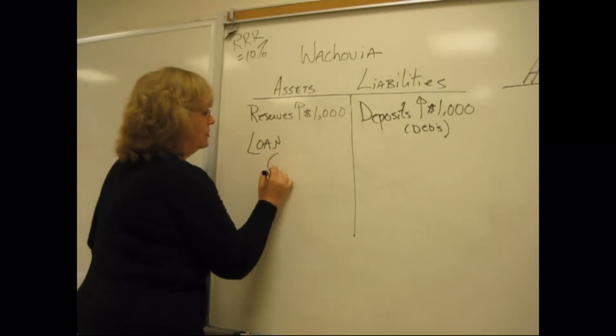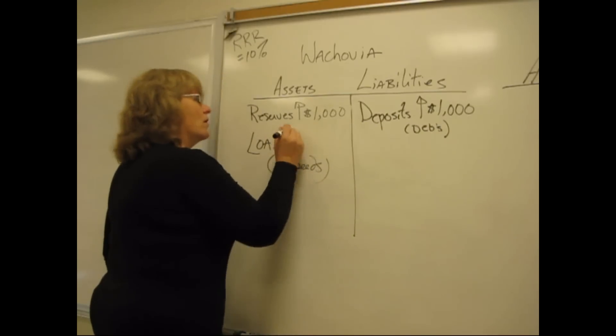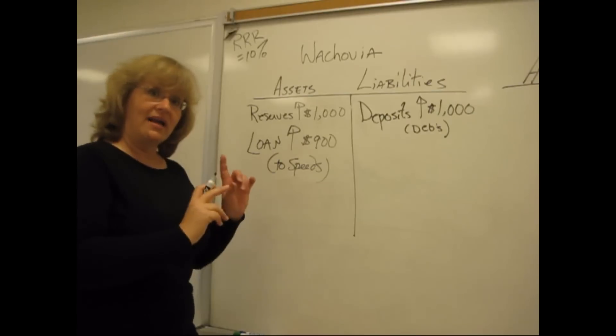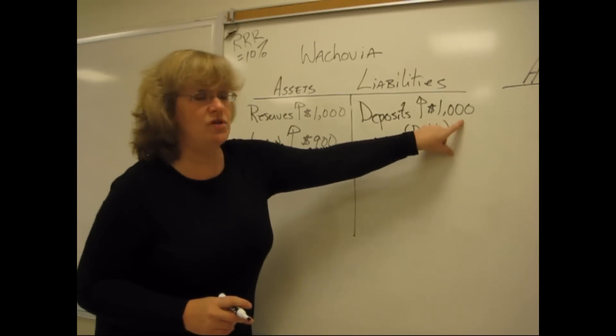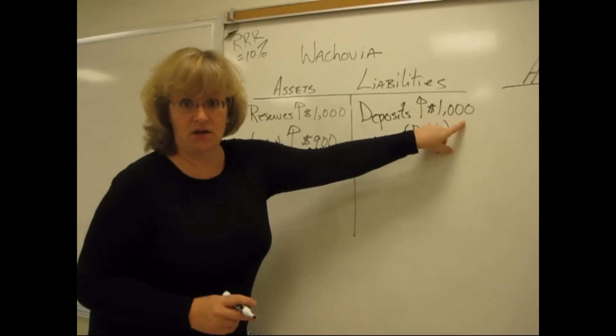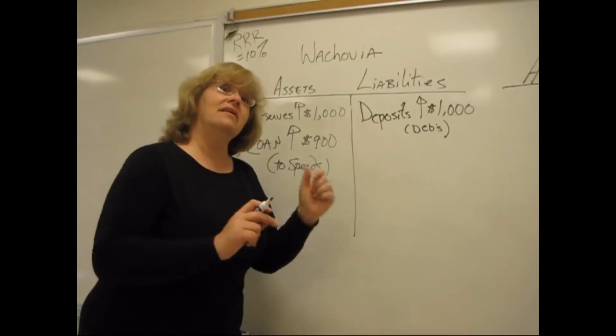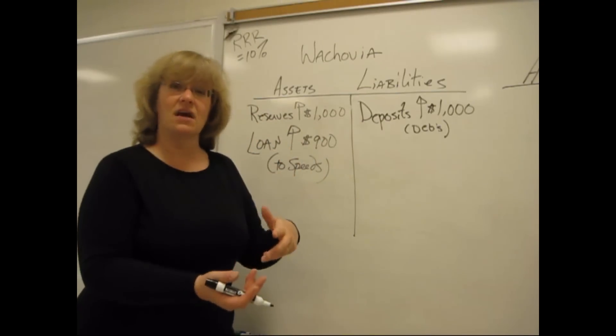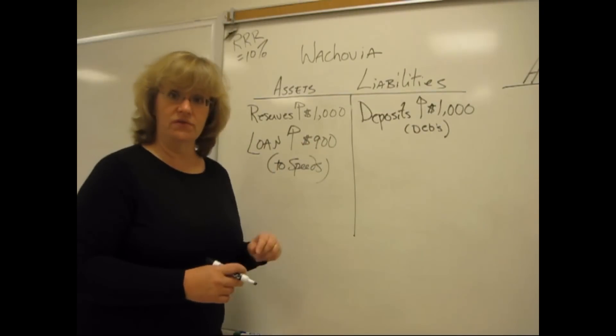Loan, and I'll put down here to Speed, go up by $900. Now, I got that $900 by taking 10% times the new deposit of $1,000. That's $100. The bank's got to keep that on hand. They can lend out the rest. $1,000 of reserves minus the $100 they've got to keep is $900. And that's what they're going to loan to Speed.